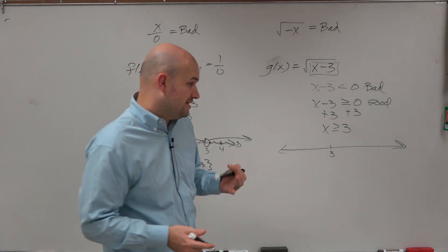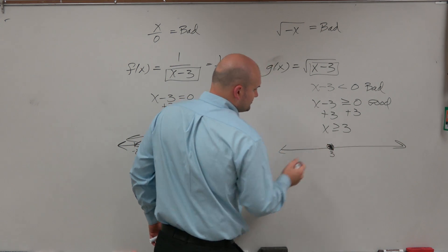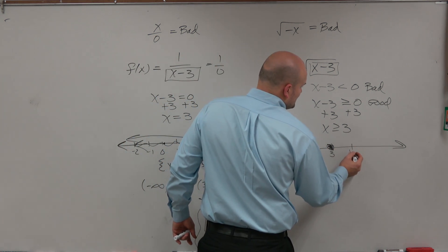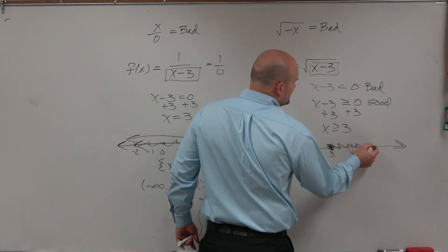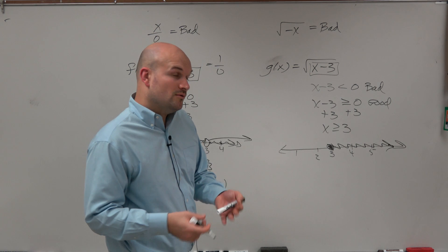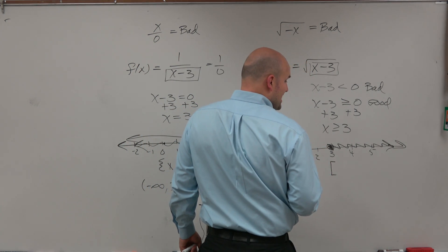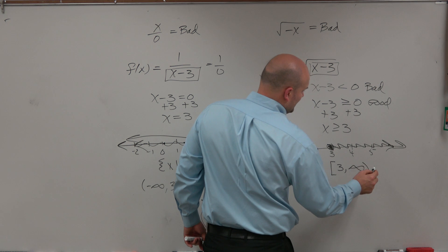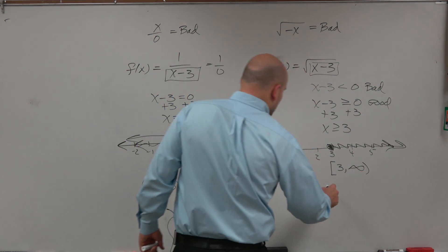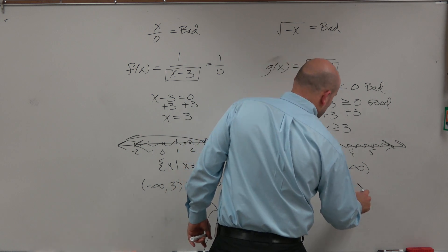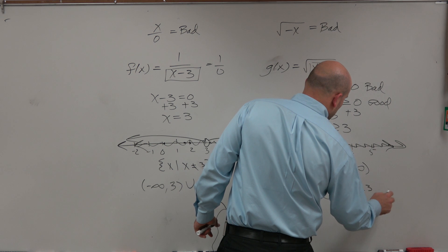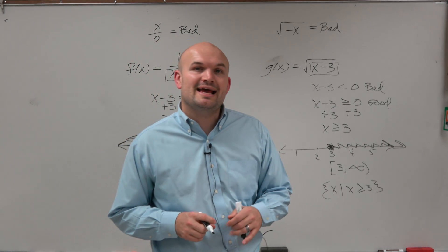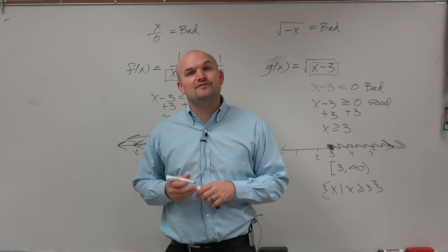Going to the number line, x is greater than or equal to 3, meaning 3 is now included. It's all numbers going to the right-hand side — 4, 5, and beyond. Since 3 is contained, in interval notation I use a bracket: from 3 to infinity, written as [3, infinity). Or in set notation: the set of x such that x is greater than or equal to 3. That is how you write the domain of two different functions using interval and set notation. Thanks.